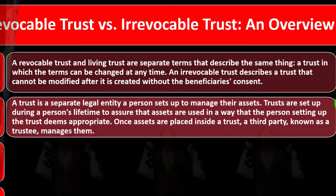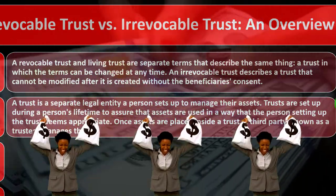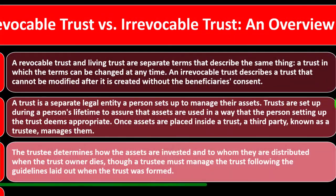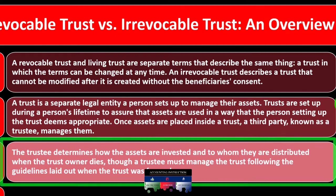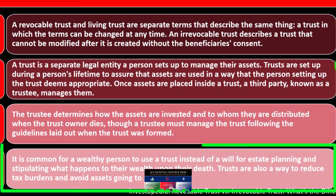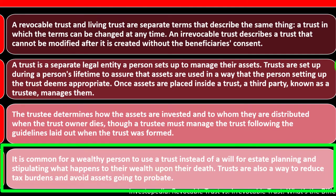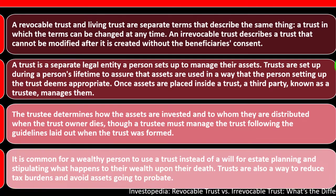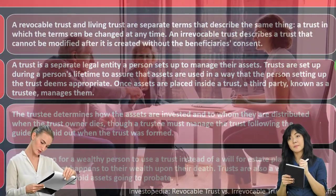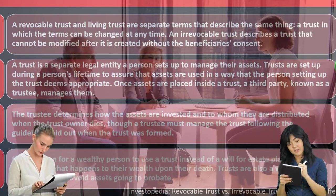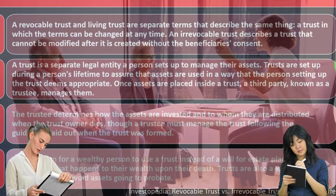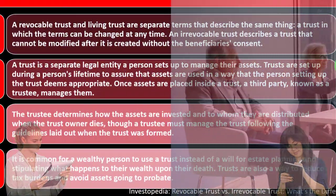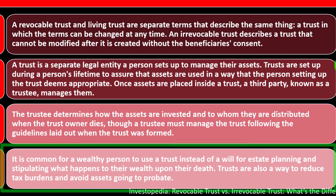The trustee determines how the assets are invested and to whom they are distributed. When the trust owner dies, the trustee must manage the trust following the guidelines laid out when the trust was formed. It is common for a wealthy person to use a trust instead of a will for estate planning. The larger the estate, the more useful it may be to set up a trust. Trusts are also a way to reduce tax burdens and avoid assets going to probate.